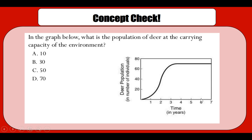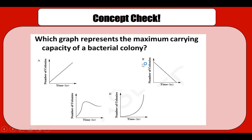Can you tell me what is the population of the deer at the carrying capacity of the environment? It's D — you can see here it's overshooting, going up high, and slowly balancing at the carrying capacity of the environment, which is around 70. Another concept check: which graph represents the maximum carrying capacity of a bacterial colony?